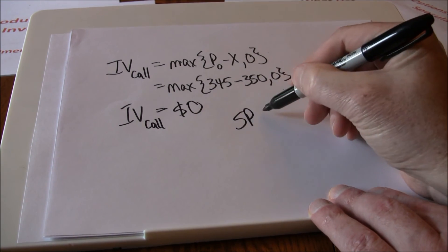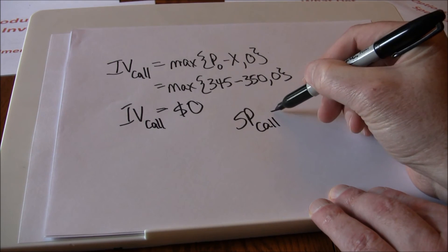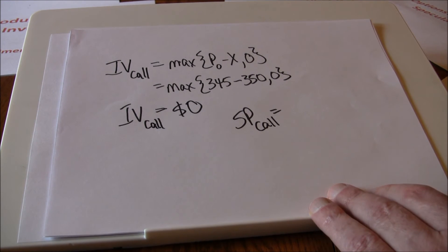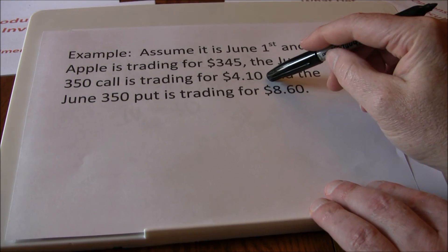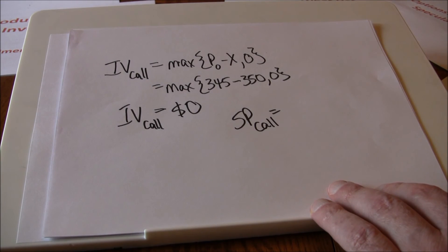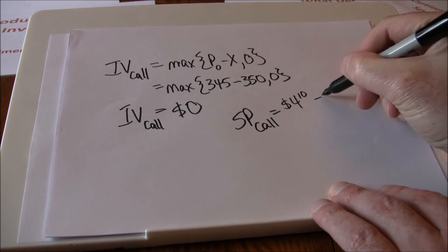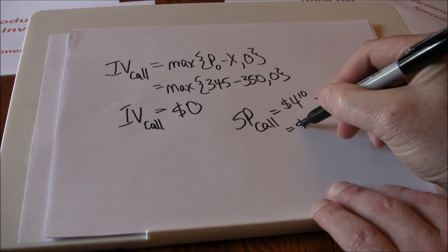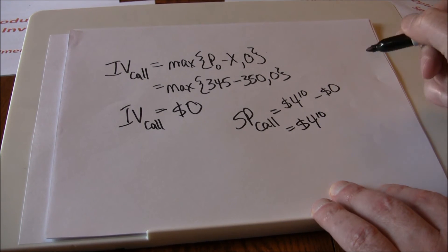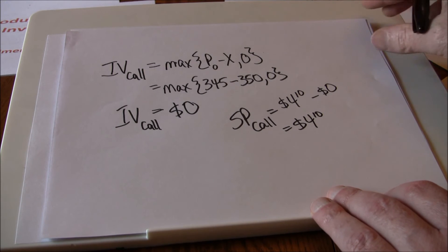That leaves the speculative premium. The speculative premium is the option price minus the intrinsic value. Remember that call option is currently trading for $4.10, and since the intrinsic value is zero, the speculative premium for our call option is $4.10.